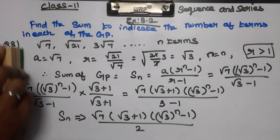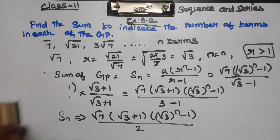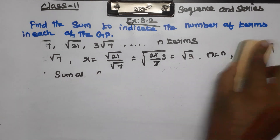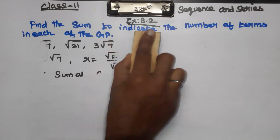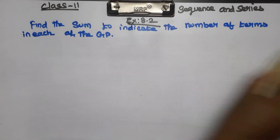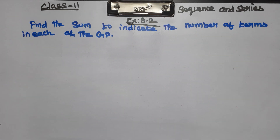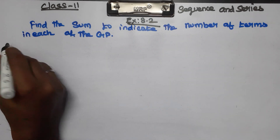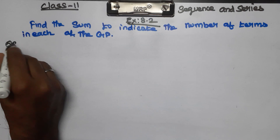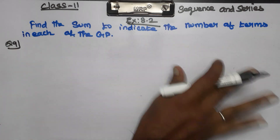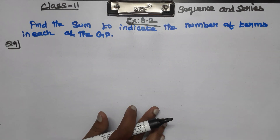Simplifying using √9 equals 3, we get the final sum of the GP for question 8.